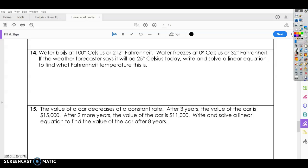Alright, the next problem says, water boils at 100 degrees Celsius or 212 degrees Fahrenheit. Water freezes at 0 Celsius or 32 degrees Fahrenheit. So those are our two points. So we can start by saying 100 and 212 and then 0 and 32. So again, we're going to start by finding the slope.